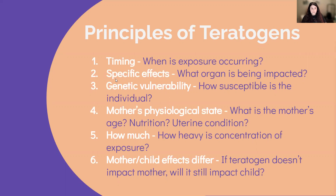First is timing — when is the exposure of the teratogen occurring? The first two weeks, the germinal period, are going to be the most vulnerable. If a teratogen is introduced during that time, it can actually completely terminate the organism and it won't develop any further. Organs are developing at different times, so they'll be more susceptible to teratogens during their prime time of development. Timing matters a lot.